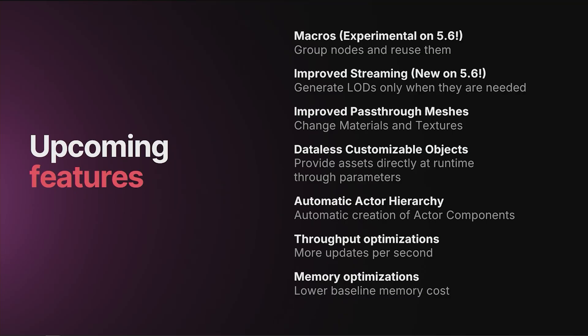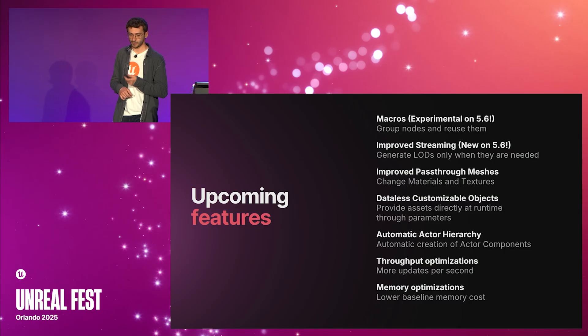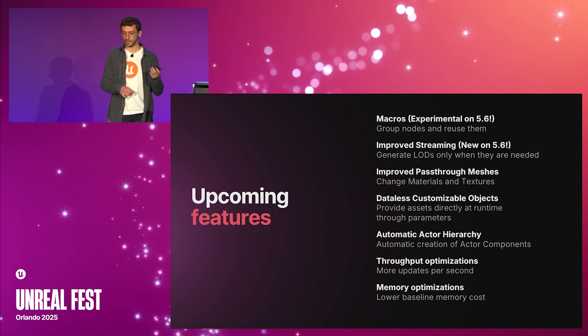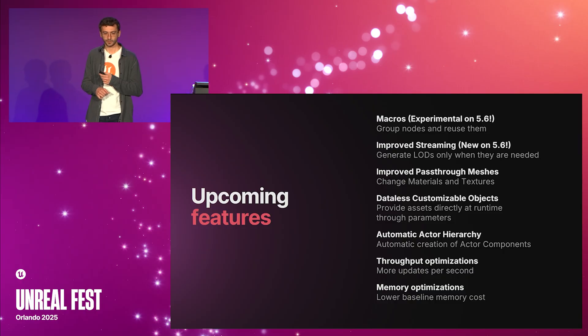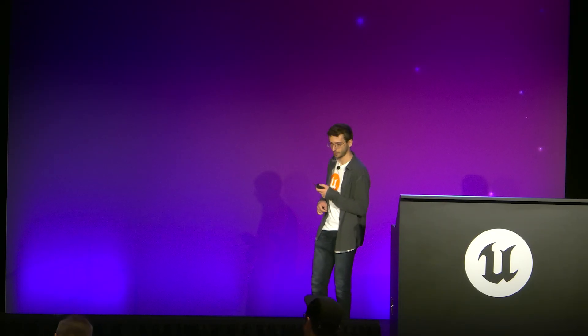At Mutable, we are constantly improving. Here's an overview of what's coming next: Macros, just released as experimental in 5.6, where similar to Blueprint macros you can group nodes and reuse them. Improved streaming, just released in 5.6, which improves overall CPU and memory cost during runtime updates. Improved pass-through meshes, where you will be able to easily change the material parameters of pass-through meshes. Dataless customizable objects, where you will be able to pass textures and skeletal meshes as parameters at runtime. Automatic actor hierarchies, where Mutable will generate not just skeletal meshes but full actor hierarchies with different components. Throughput optimizations, where Mutable will perform more updates per second — especially useful for crowds. And finally, memory optimizations, giving Mutable a lower baseline memory cost for large customizable objects.